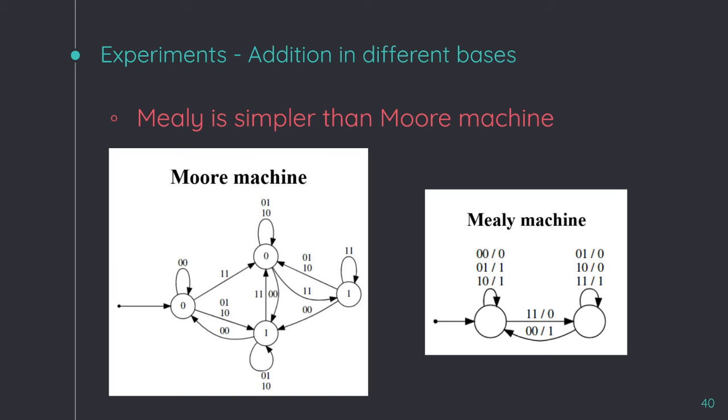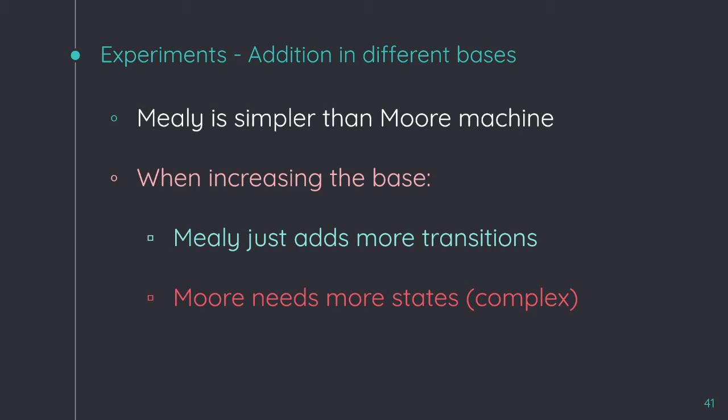Because the output is explicitly in the transition, and the states work as a kind of memory to remember the carry. So, the Mealy machine is simpler than the Moore machine. When increasing the base, Mealy just adds more transitions, keeping its complexity, while Moore needs more and more states, increasing this complexity.